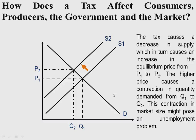The higher price causes a contraction in quantity demanded from Q1 to Q2. The reason quantity demanded has reduced is the law of demand: the higher the price, the lower the quantity demanded. Changes in price do not shift the demand curve but rather cause a movement along the demand curve. This contraction in market size might pose an unemployment problem, because with reduced supply, firms may want to cut back on employment and therefore unemployment levels may go up.